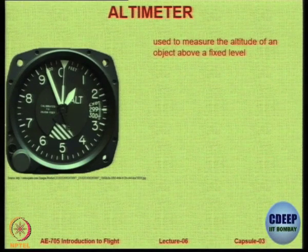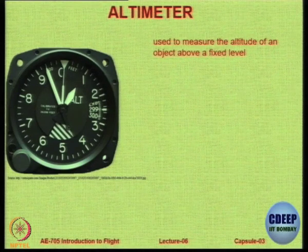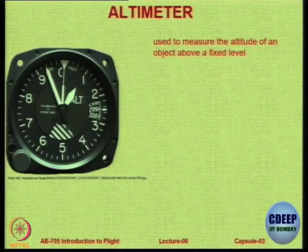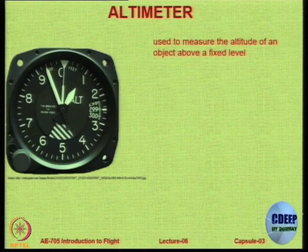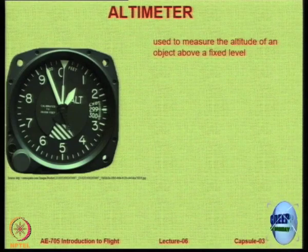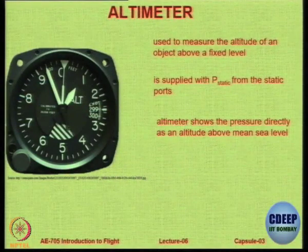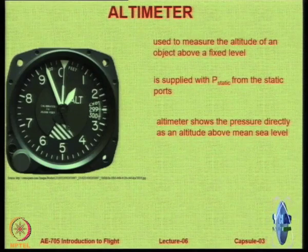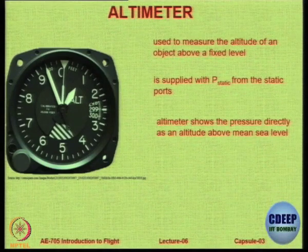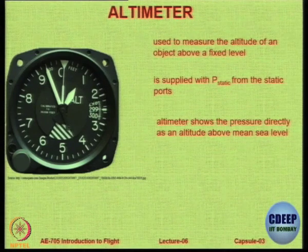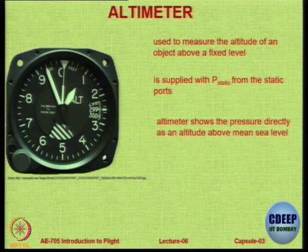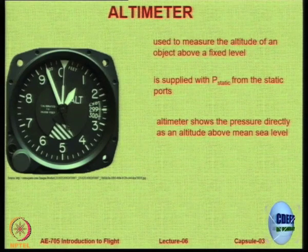Essentially this instrument is used to measure the altitude of the aircraft above a fixed level. Since it is based on pneumatic or pressure, it is going to measure only the pressure altitude. This instrument is supplied with the static pressure from the static ports. The altimeter shows you the pressure directly as an altitude above mean sea level. You will have to correct for the location of mean sea level at any specific location to get the geometric or true altitude — this gives you only pressure altitude.